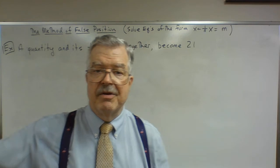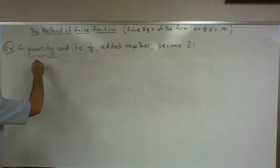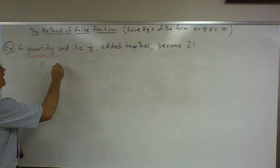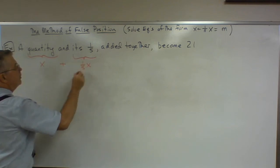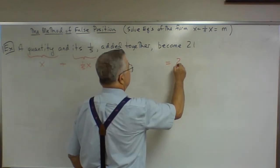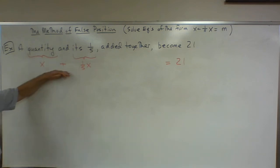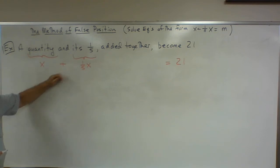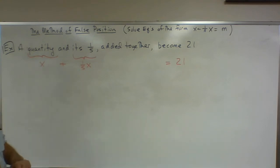Now let's see what they're actually saying. A quantity — there's our x — and its one-fifth, one-fifth x, added together become 21. In equation form, this is what we're going to be solving. Now let's see how we use the method of false position.